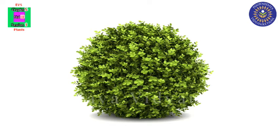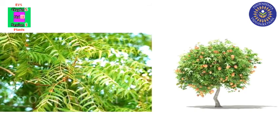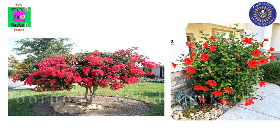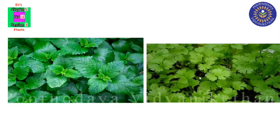Now we can learn examples for each type. Trees: neem tree, mango tree. Shrubs: bougainvillea, hibiscus. Herbs: mint, coriander.